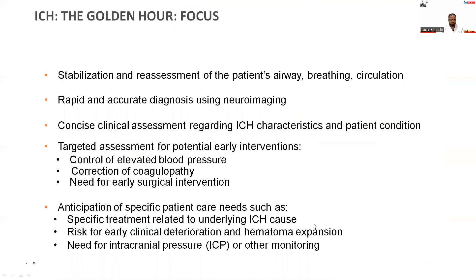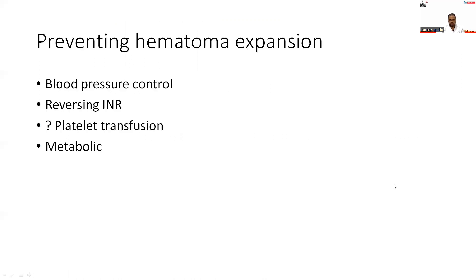In the golden hour, we should stabilize and reassess the patient — airway, breathing, circulation — along with rapid and accurate neuroimaging, clinical assessment regarding ICH characteristics, control of intracranial pressure, correction of coagulopathy, need for early surgical intervention, specific treatment related to ICH, underlying ICH etiology, early clinical deterioration and hematoma expansion, and need for ICP monitoring.